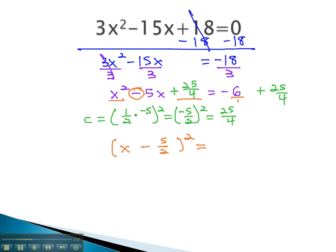On the right side, we'll need a common denominator. Multiplying by 4 over 4 gives us negative 24 fourths, plus 25 fourths, which is 1 fourth.